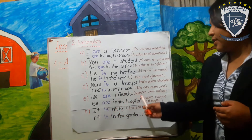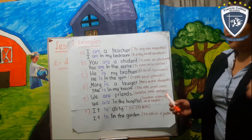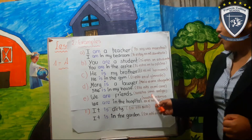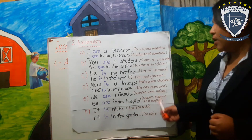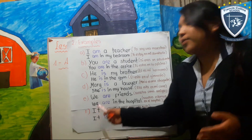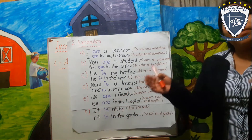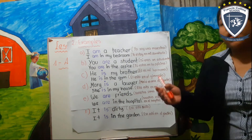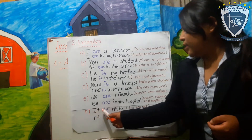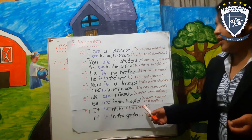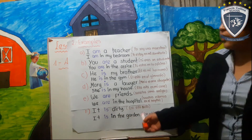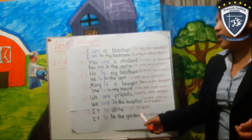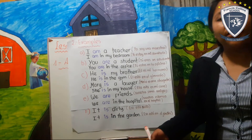We are friends — nosotros somos amigos. We are in the hospital — nosotros estamos en el hospital. Por ejemplo, if we talk about a dog — si hablamos acerca de un perrito: It is dirty — eso está sucio. Or, It is in the garden — eso está en el jardín.